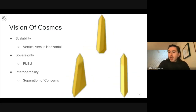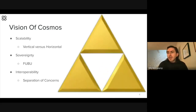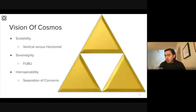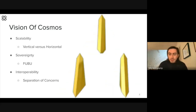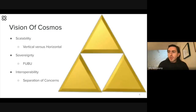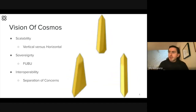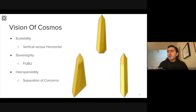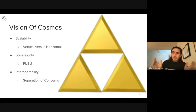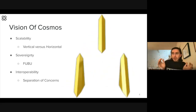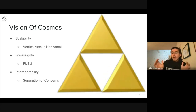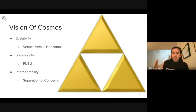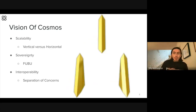Scalability, sovereignty, and interoperability are all achieved through a paradigm inside the Cosmos space of application-specific blockchains. An application-specific blockchain is similar to a dApp or a smart contract on a shared-state virtual machine blockchain like Ethereum, except instead of having a bunch of dApps and smart contracts on a single blockchain all competing for processing power, storage, and block space, you have essentially a single smart contract on an entire blockchain. The whole blockchain is dedicated to serving the users of that one application.